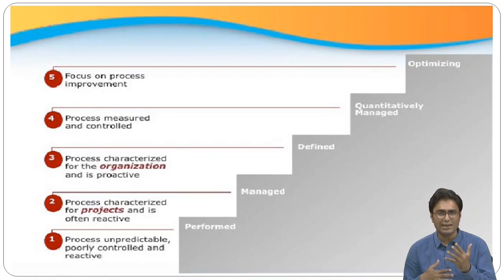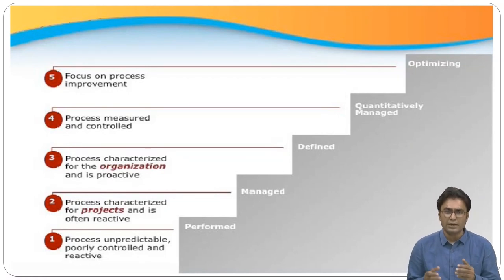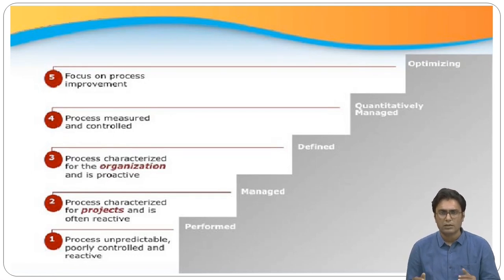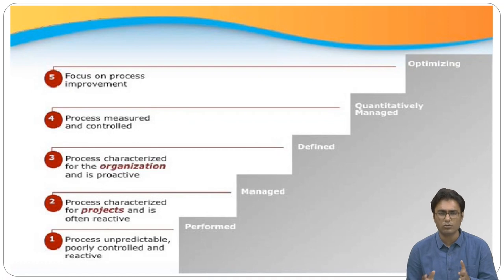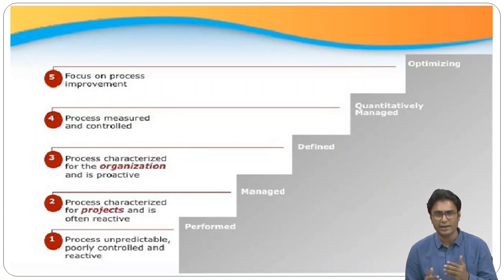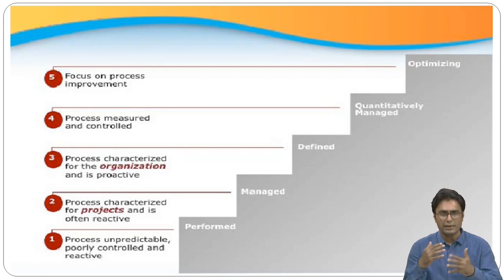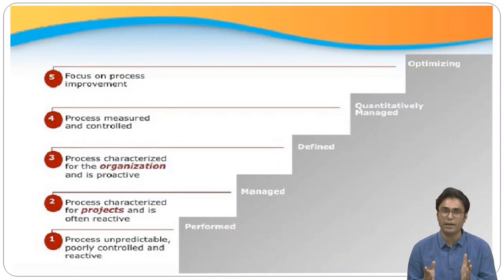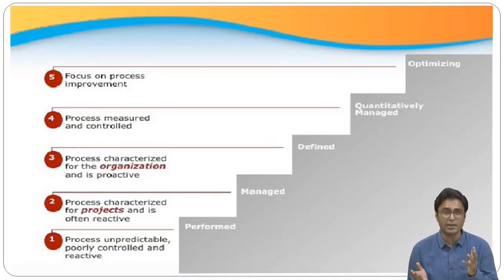Maturity level one is Performed. At this level, processes are usually ad hoc and chaotic. The organization does not provide a stable environment and does not use any proven processes. Such organizations often produce products and services that work; however, they frequently exceed budget and schedule. Characteristics include a tendency to overcommit, abandon processes in times of crisis, and be unable to repeat their past successes.